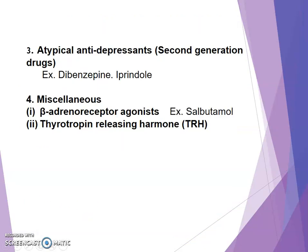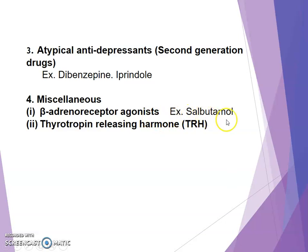Next class: atypical antidepressants, that is second-generation drugs, for example dibenzoxepine and aprindole. Last class: miscellaneous, divided into beta-adrenoreceptor agonists, for example solvitamine, and thyrotropin-releasing hormone (TRH).